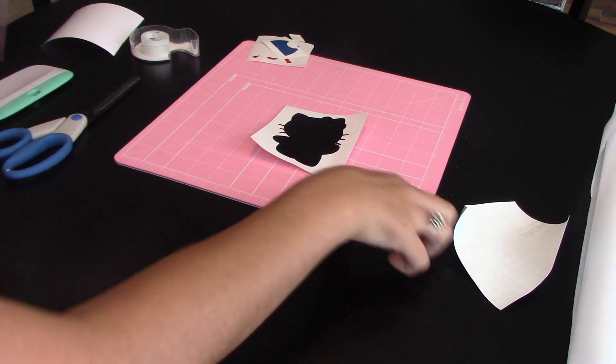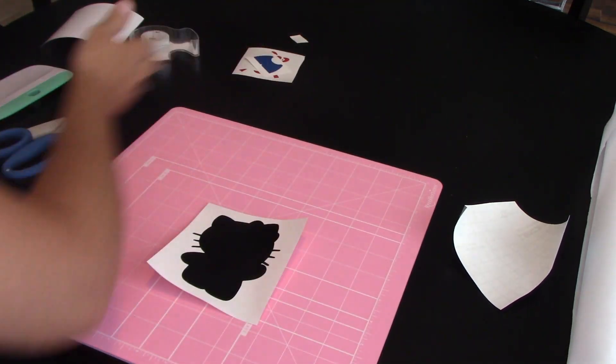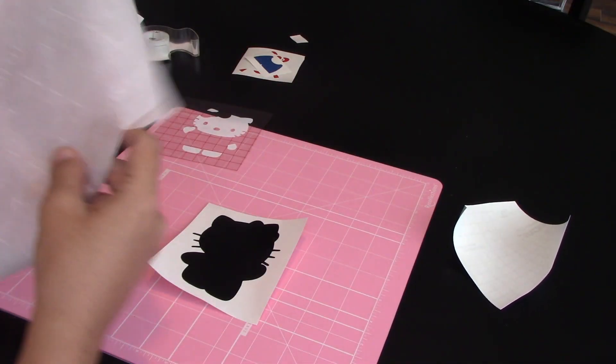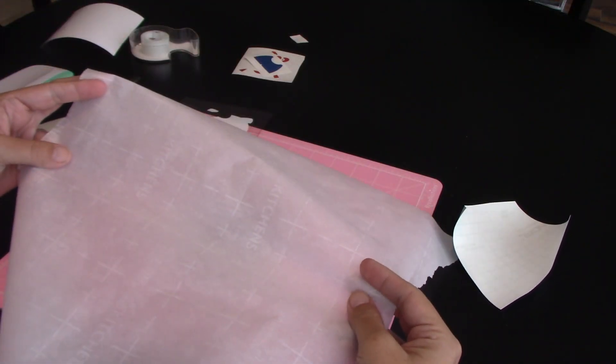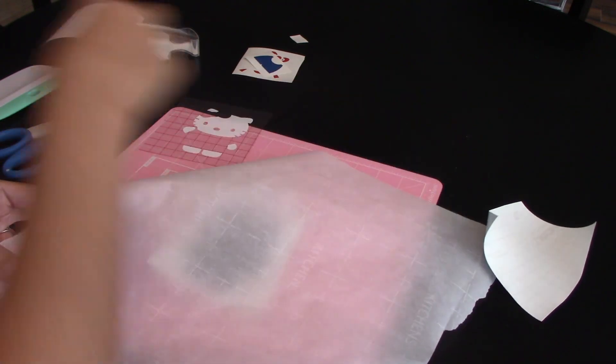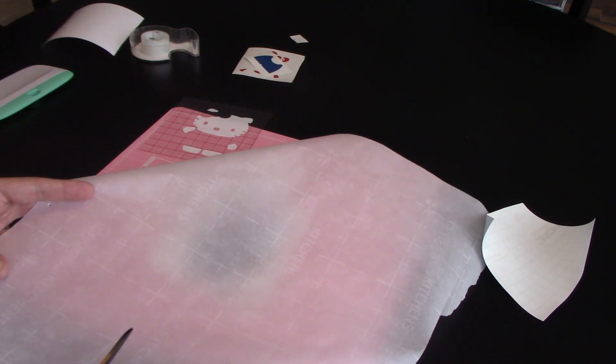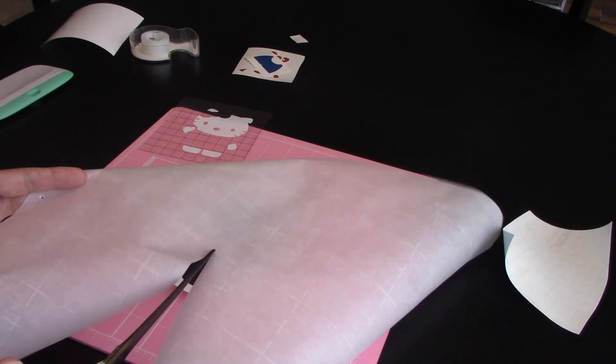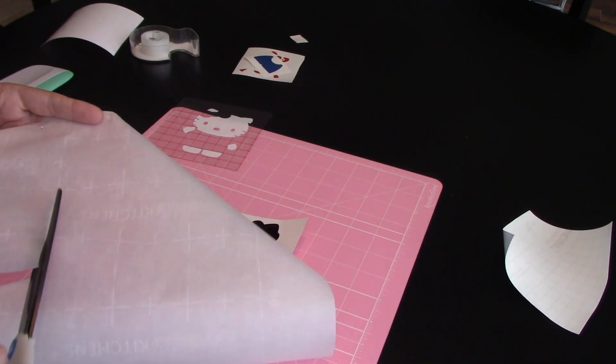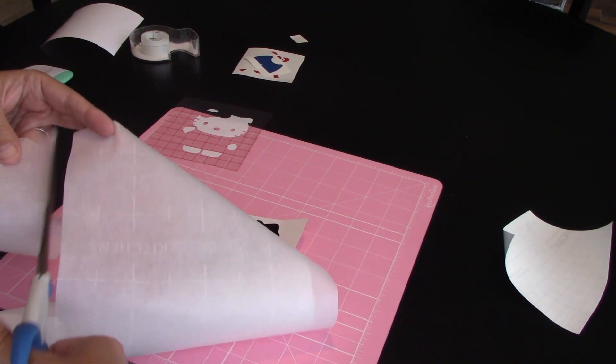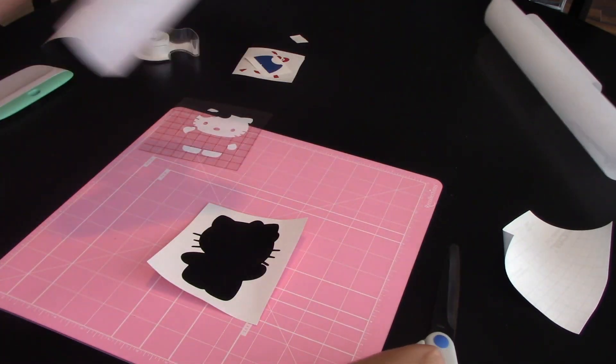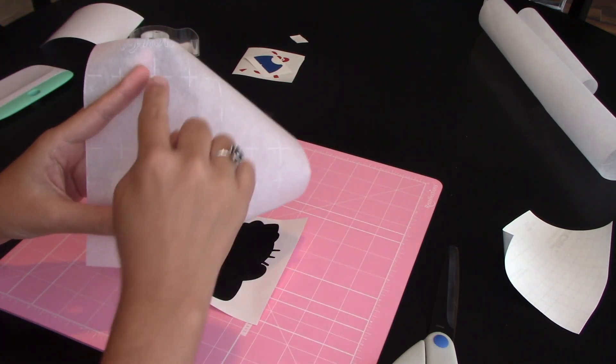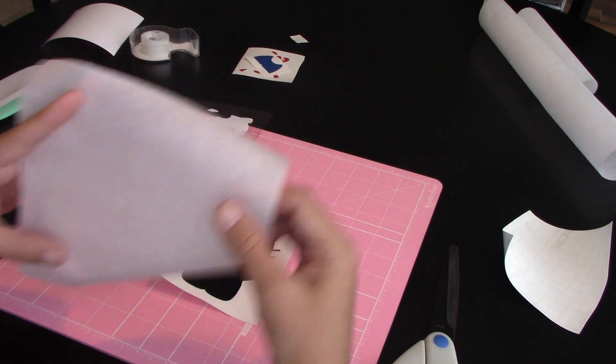Now here is where your contact paper comes into play. I'm sorry, here's where your parchment paper comes into play. I'm going to cut it just a little bit smaller. It's like they made this specific parchment paper for crafters. I don't know if you can see, but there are grids on this parchment paper. It's a beautiful thing.